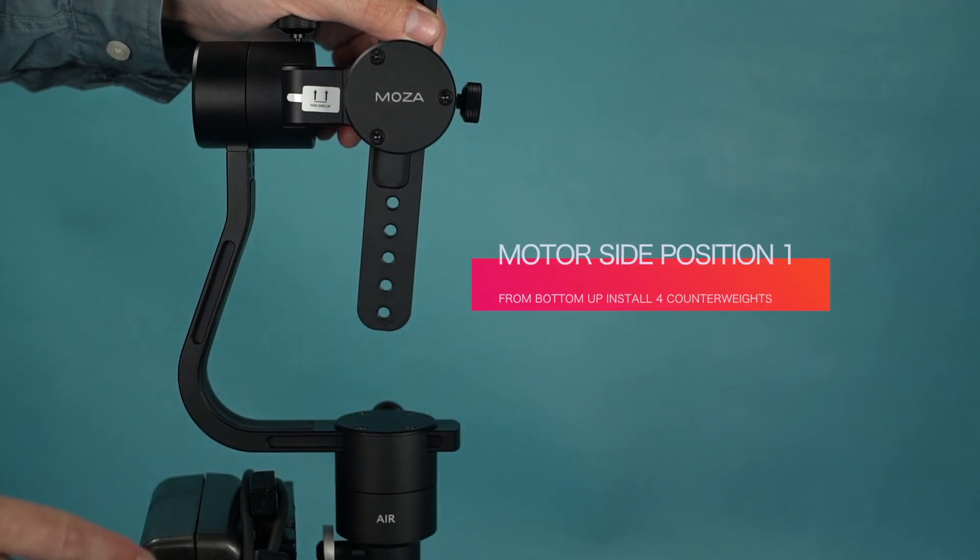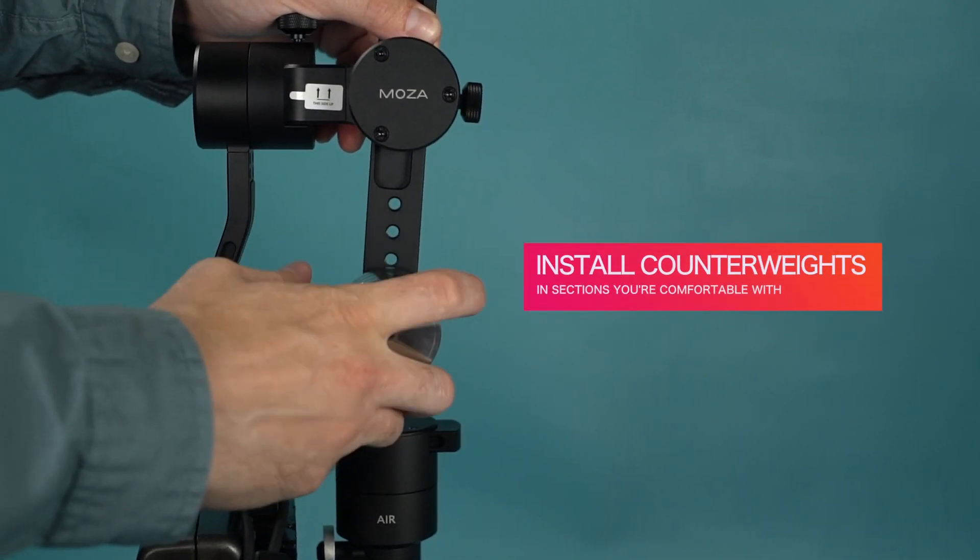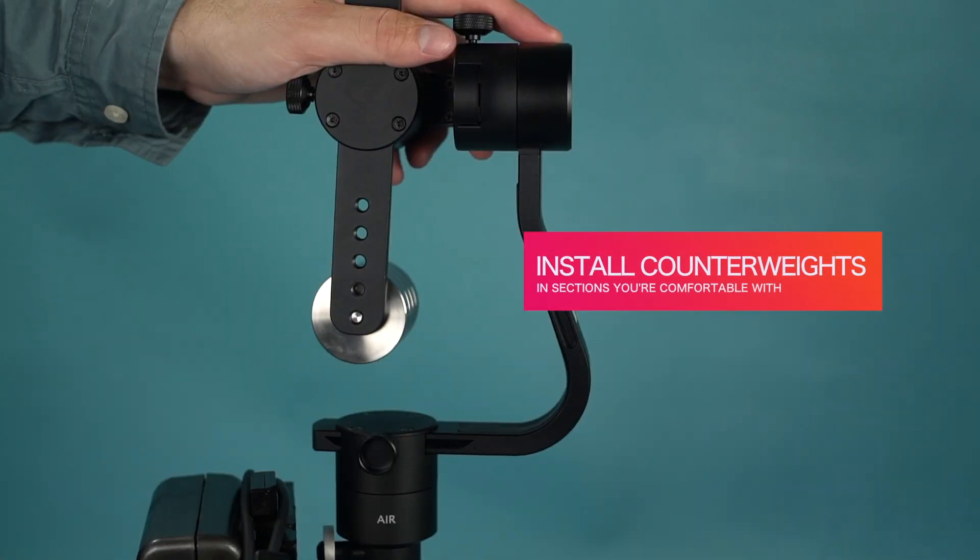On the motor side, on position one, install four counterweights. When installing counterweights, install them in sections that you're comfortable with.